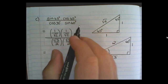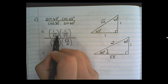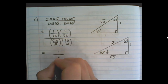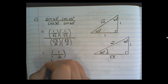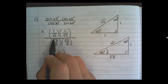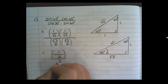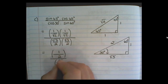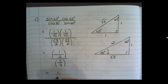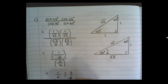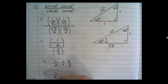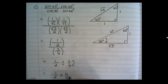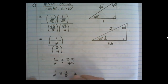Now that we have substituted, we multiply: 1 times 1 is 1, over √2 times √2 which is √4, which is 2. The denominator becomes √3 times √3 = √9 = 3, over 2 times 2 = 4. So we have one half divided by three quarters. From Grade 9, we change division to multiplication and take the reciprocal — swap numerator and denominator after the division sign. Then simplify: 1 times 4 over 2 times 3, and simplify that fraction.